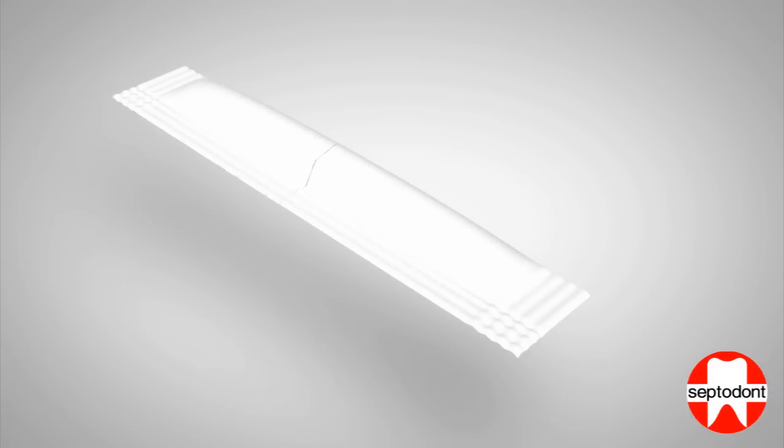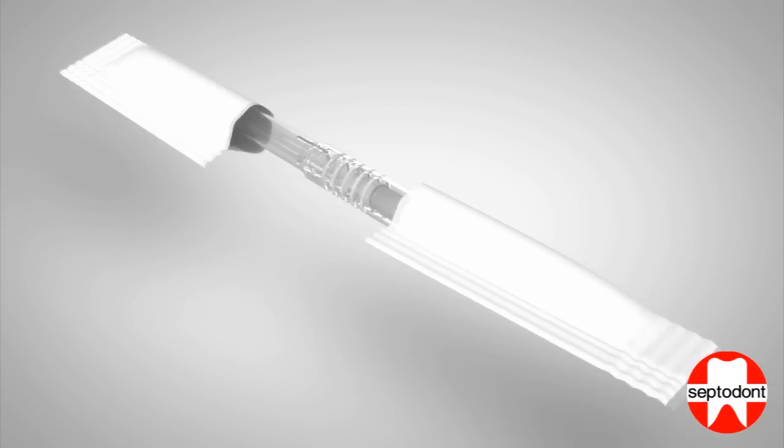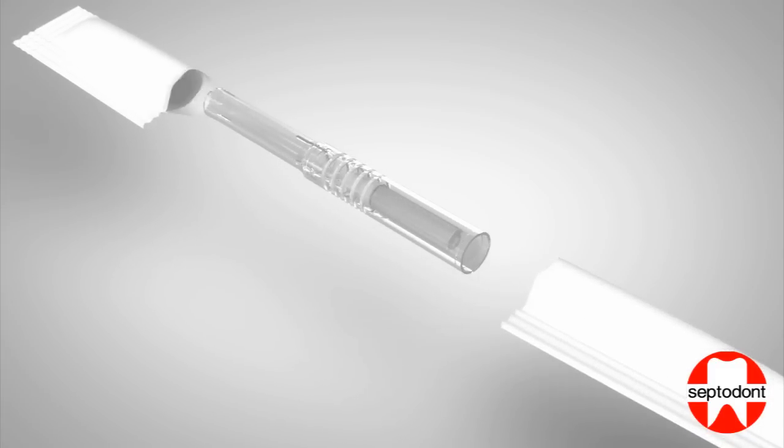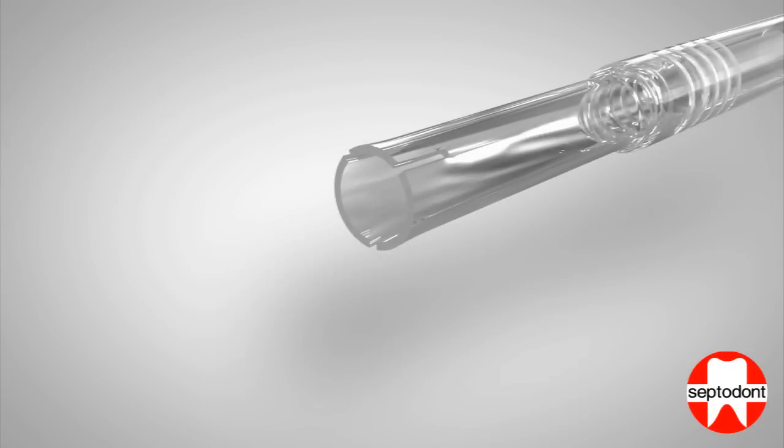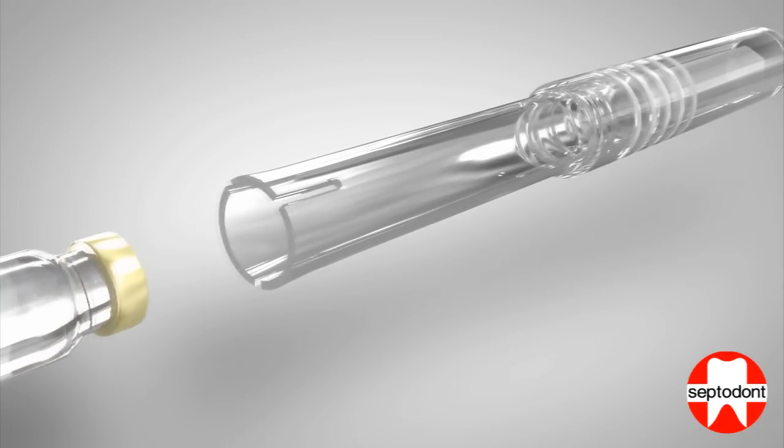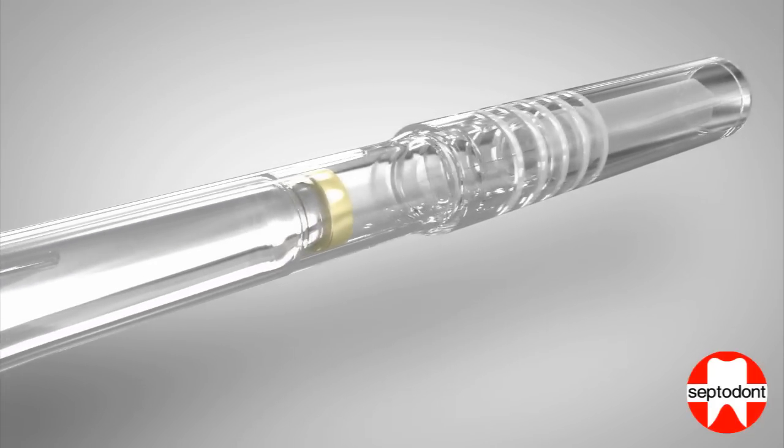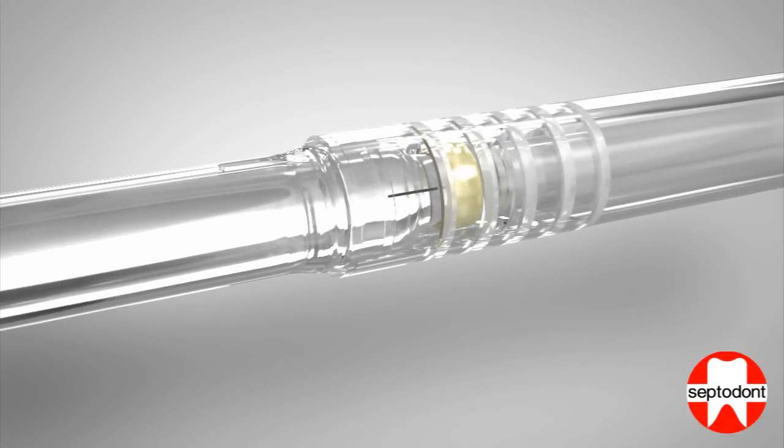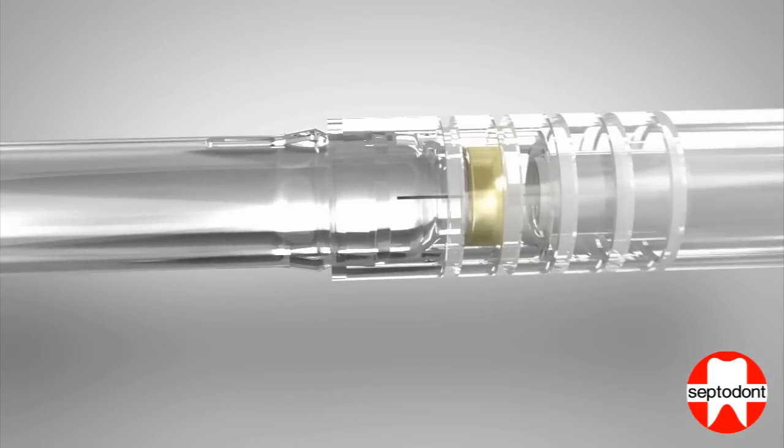Remove the syringe by tearing its protective wrapping. Step 1: Grip the barrel firmly and fully insert the cartridge into the open barrel end of the syringe.